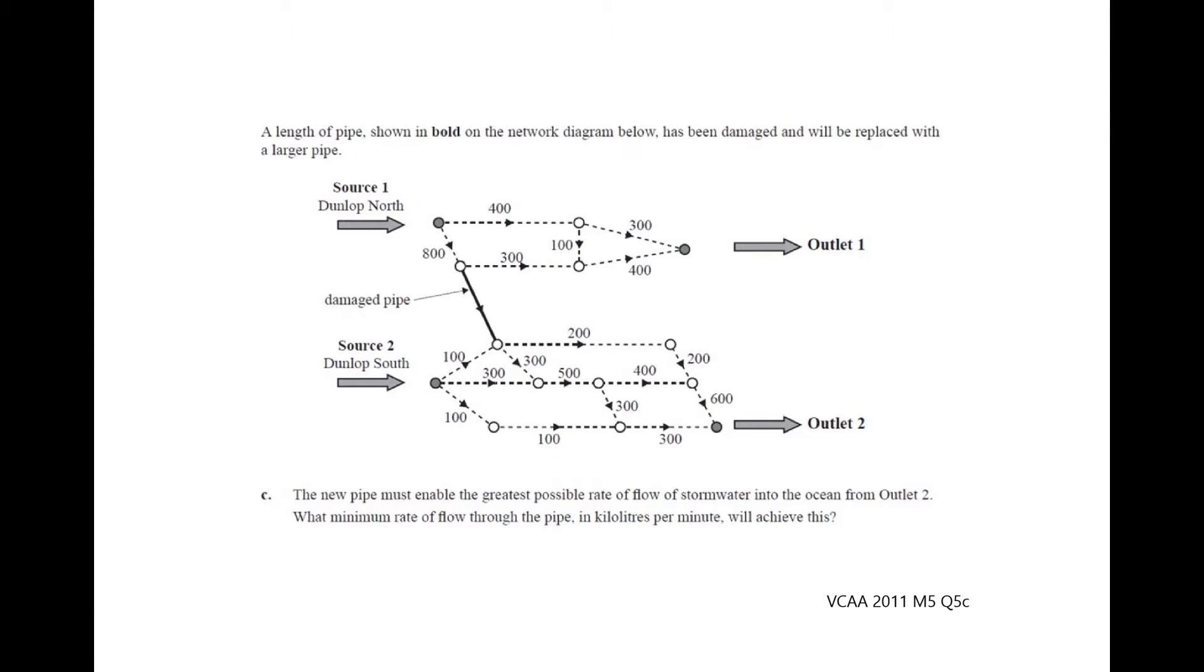Okay, so this question is saying that we need to work out what is a possible new size for this damaged pipe here. So what we're going to do to begin with is work out what is the max flow for source 2 to outlet 2, and then see what possible pathways are left if we then treated the damaged pipe as the source. But to start with, we'll ignore the damaged pipe altogether.